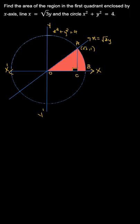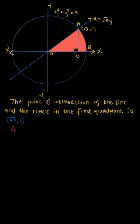A diagram is drawn with the given elements: the circle x square plus y square equal to 4, the line x equal to root 3y, and the x-axis on an xy plane. The line and circle intersect at point A, which is (root 3, 1), in the first quadrant.